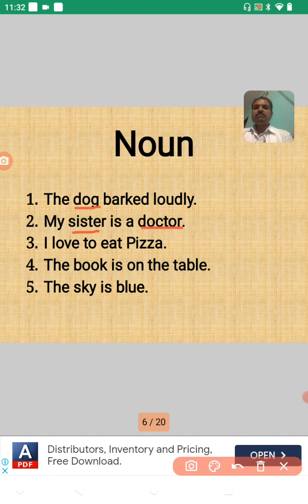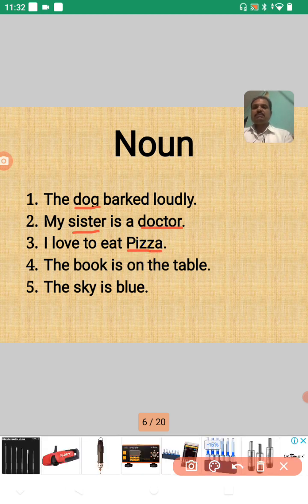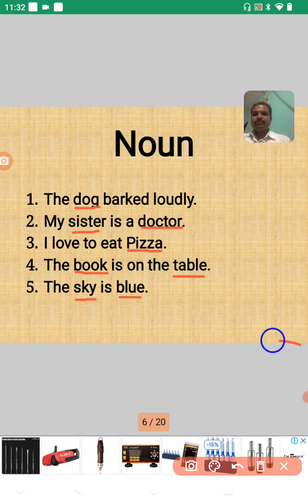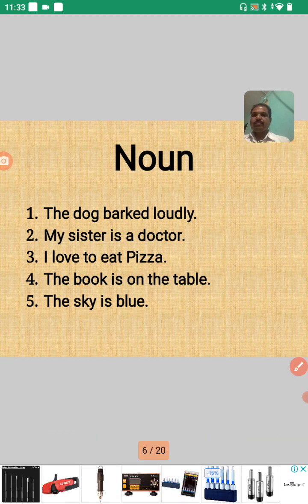Number three: 'I love to eat pizza.' Mala pizza kaila kovatat — pizza ek khadya padarth aahe, so 'pizza' is a noun. Number four: 'The book is on the table.' Here both 'book' and 'table' are nouns. Number five: 'The sky is blue.' Here 'sky' is the noun — sky is a thing, therefore it is a noun.